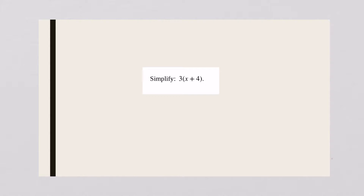For this problem right here, there is a long way to do this problem and there is a short way. The reason why multiplication was ever invented is because it made additions go so much quicker. This right here says I have three of these: x plus 4, x plus 4, x plus 4.